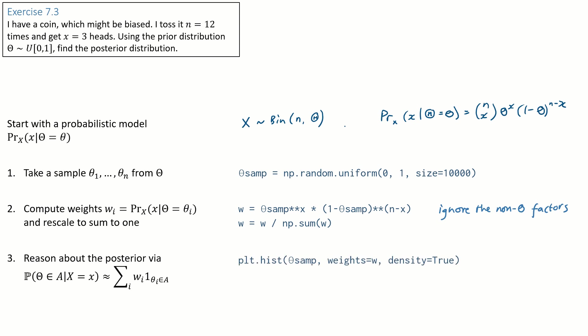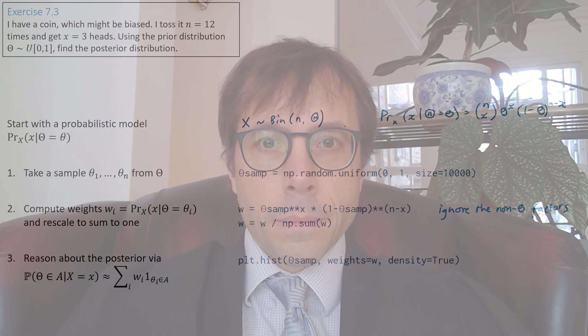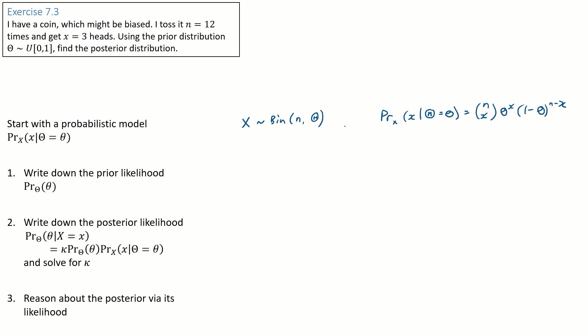Finally, report whatever we want. For example, we could plot a histogram of the posterior distribution and we can do that very easily with matplotlib using the weights equal w option. So that's all there is to the computational approach. Let's run through this again, but we'll do it mathematically this time.